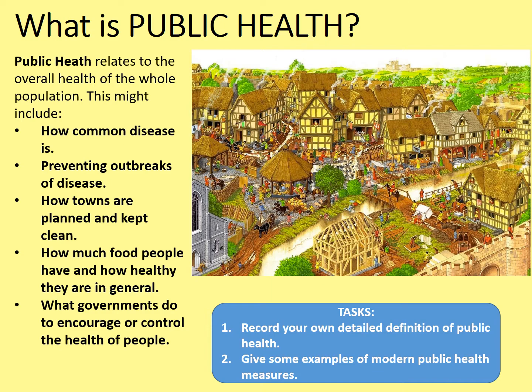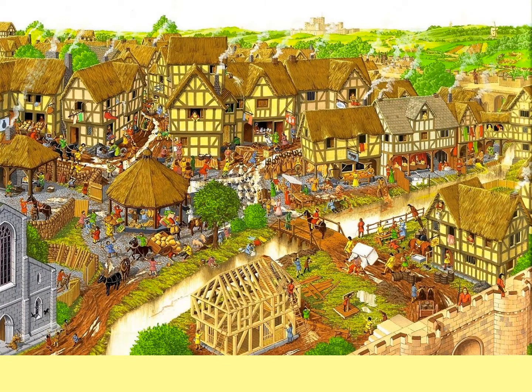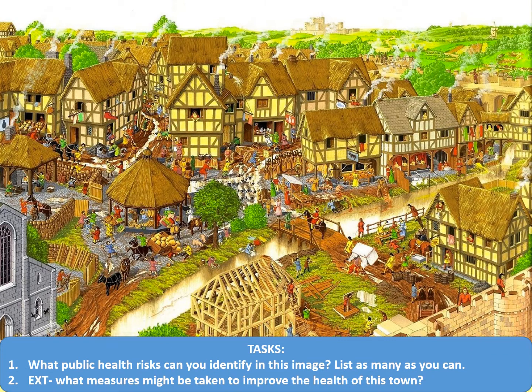But what did public health look like in the Middle Ages? Have a look at this artist's impression of a medieval town. It's not meant to suggest anywhere in particular — it's just supposed to give an impression of what a typical town might have looked like and give us as many different examples of living conditions as possible. What public health risks can you identify in this image? List as many as you can — and if you're not watching this video full screen, this is a real encouragement to do so, otherwise you won't be able to see most of the detail. Secondly, what measures might be taken to improve the health of this town?